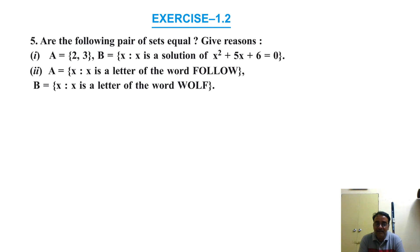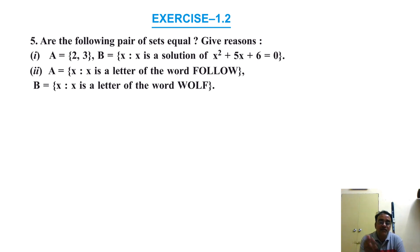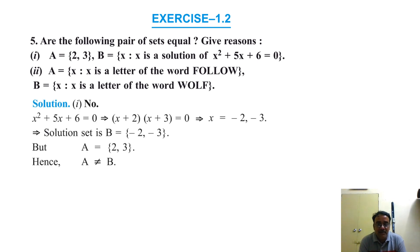Question 5: Are the following pairs of sets equal? First: A = {2, 3} and B = {x such that x² + 5x + 6 = 0}. Solving the quadratic equation gives x = −2 and x = −3. So B = {−2, −3}, but A = {2, 3}. The elements are different, so A ≠ B.